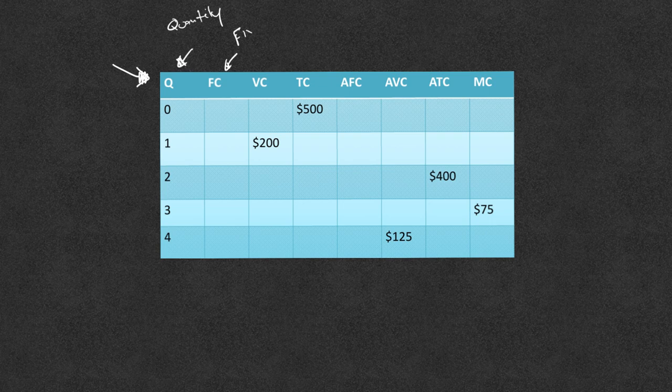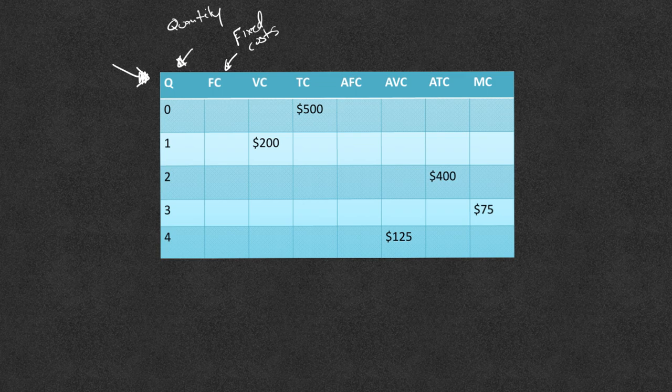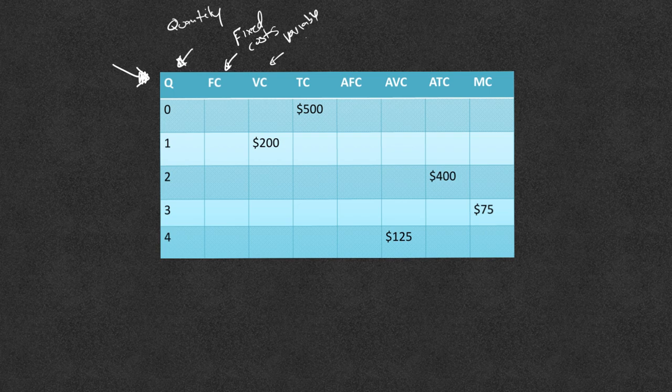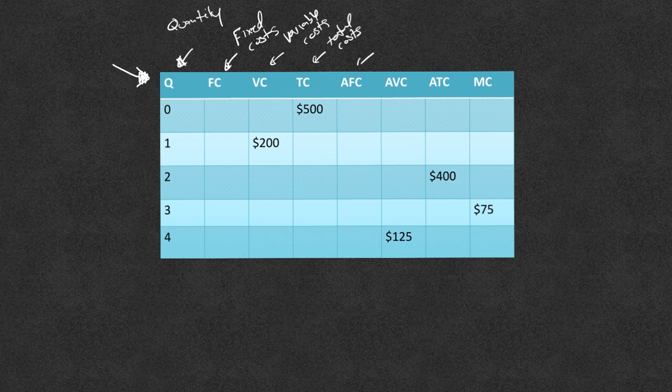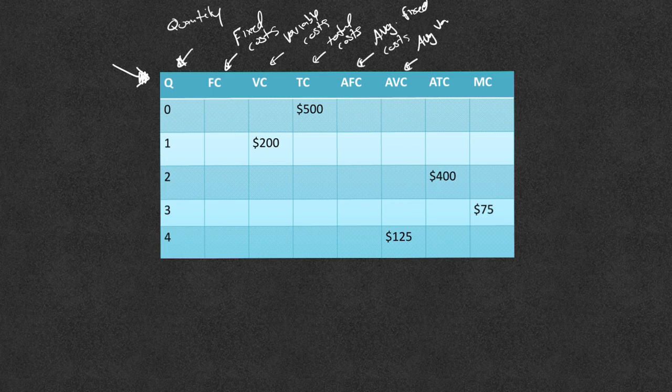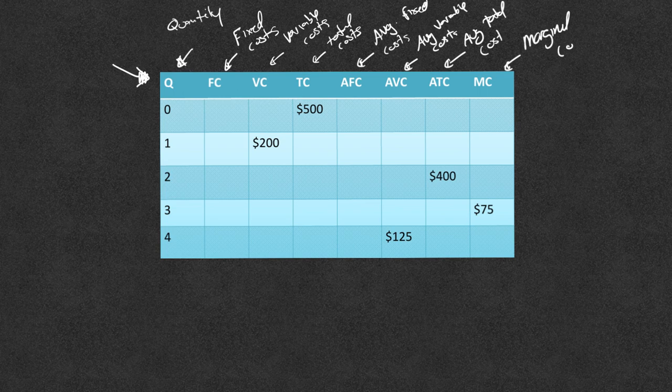FC is fixed costs. Now I'm not going to go over exactly what each one of these means. That'll be a different video. This video is assuming that you kind of have the base idea and you're just trying to figure out how to fill out one of these tables. VC is my variable costs. TC is my total costs. AFC is my average fixed costs. AVC would be my average variable costs.